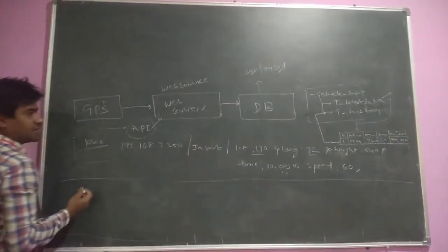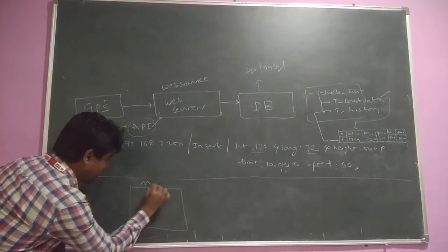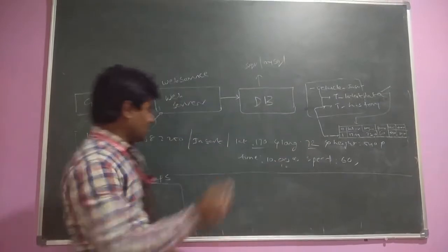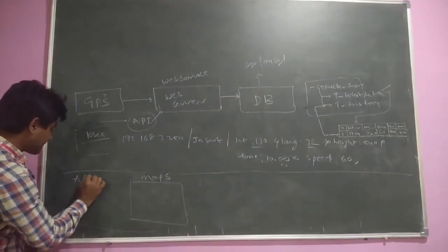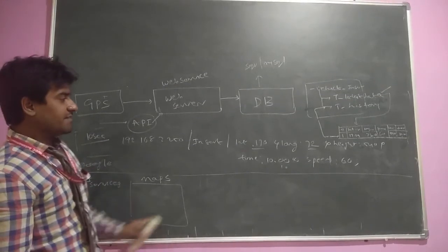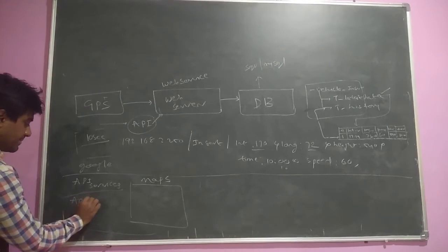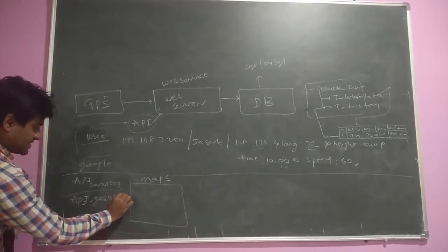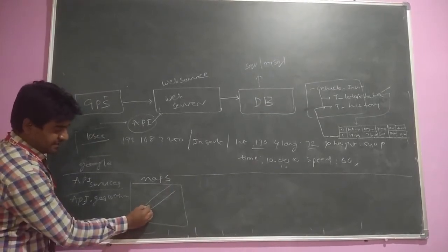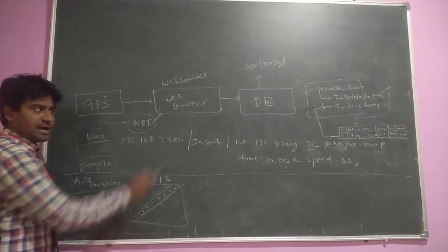Now when we want to track the data on Google Maps, using Google API services we send the latitude, longitude, and time to the Google API geolocation service. For every 10 seconds we can refresh the data and see the live location of the GPS device on a road. This is about live tracking of a vehicle using the T_latest_data table.